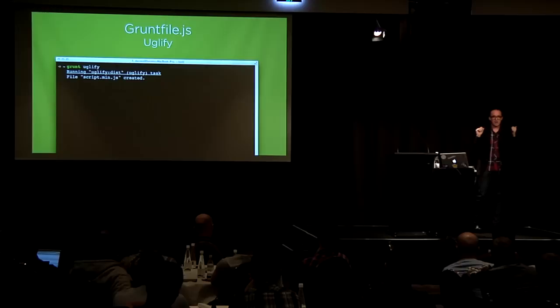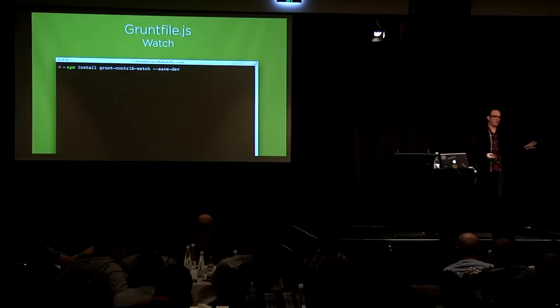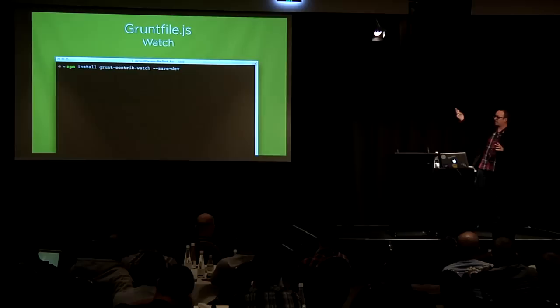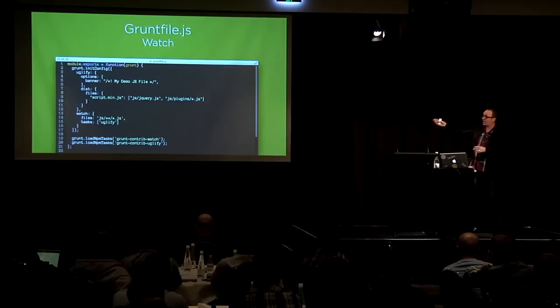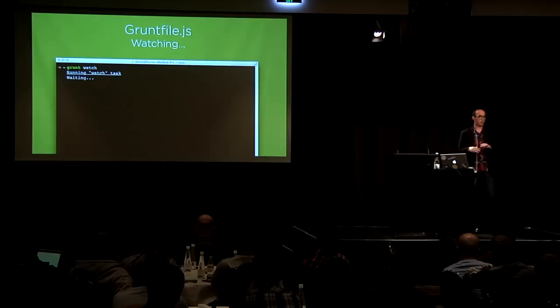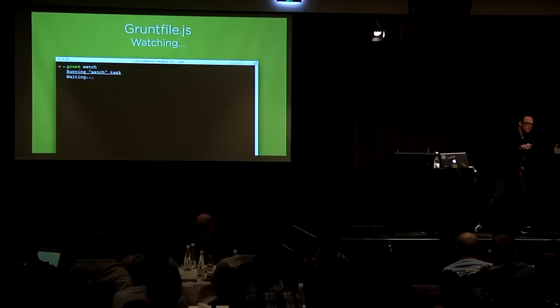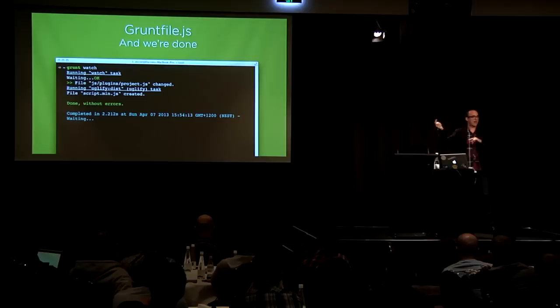What's more useful is if you can watch a folder for any changes to files. You install the watch plugin using Node Package Management, edit your Grunt file to add a watch section that says 'whenever files in my JavaScript folder change, run a task' - in this case, the uglify task. Then you type 'grunt watch' on the command line and it just sits there watching the JavaScript folder. You edit a JavaScript file, and it detects the change, runs uglify, minifies your script, and you're good to go. That's Grunt in a nutshell.